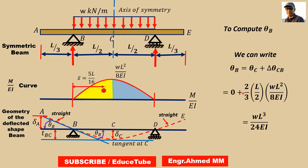The area under the diagram between points B and C is the parabolic yellow part. The area is (2/3)(L/2)(WL²/8EI), which gives theta B equal to WL² by 24EI.